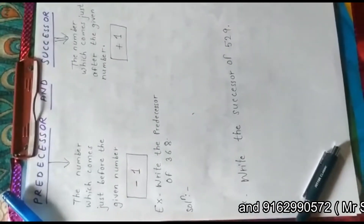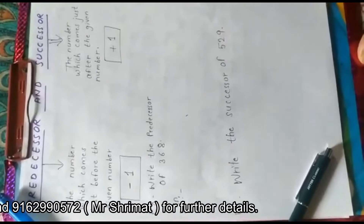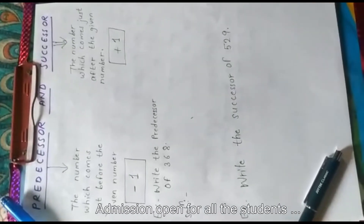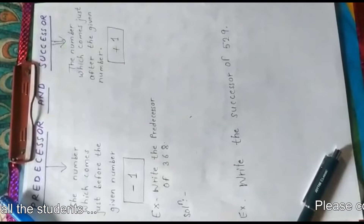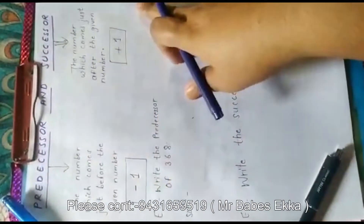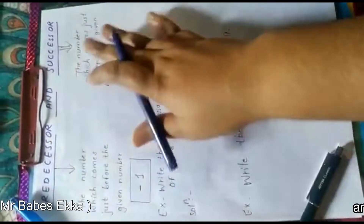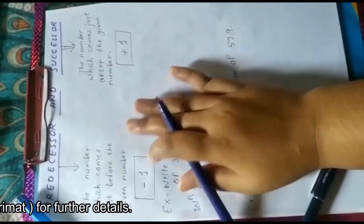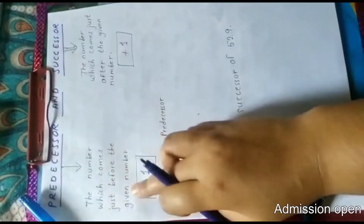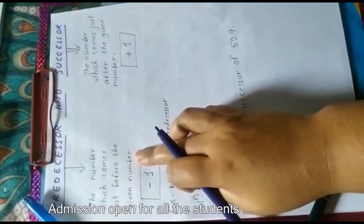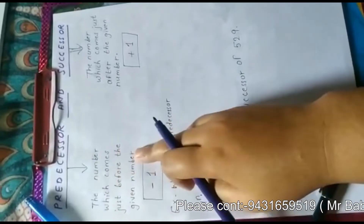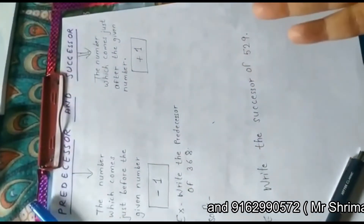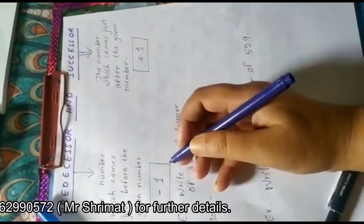Now, children, our third topic is predecessor and successor. We have already learned the concept of before and after and in between in our previous lectures. Now we will learn about predecessor and successor. The number which comes just before the given number is called its predecessor. We can also say that after subtracting one from the given number, we get the predecessor — so we have to do minus one.